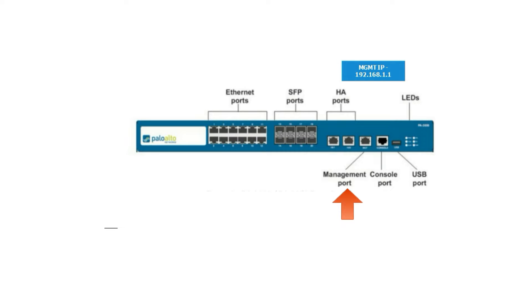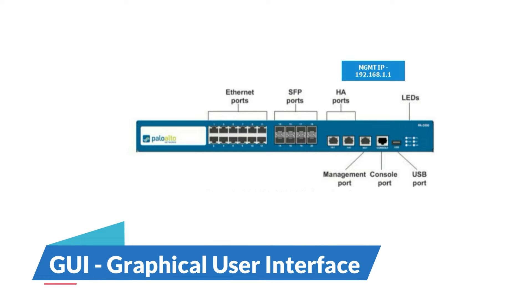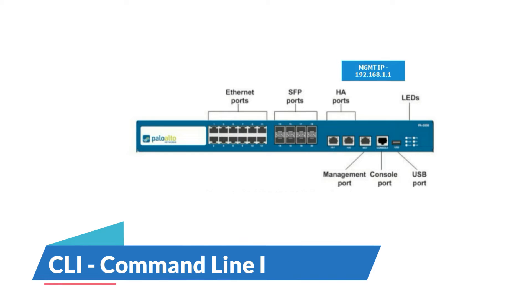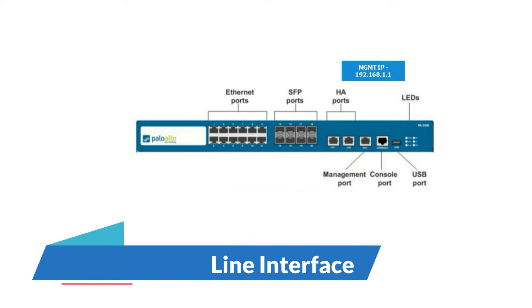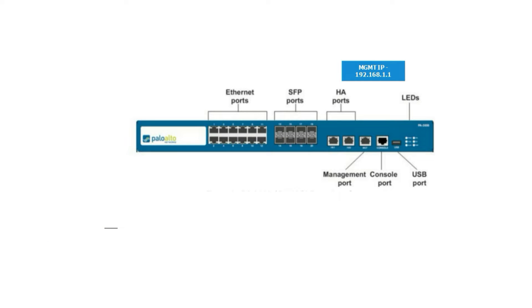The next ports are the management port and console port. These are the two ports we are going to use when configuring the firewall for the first time. In this topic, we are going to configure the management IP address on the firewall, which belongs to your local area network. The management IP address can be configured in two ways: via GUI (graphical user interface) or CLI (command line interface).